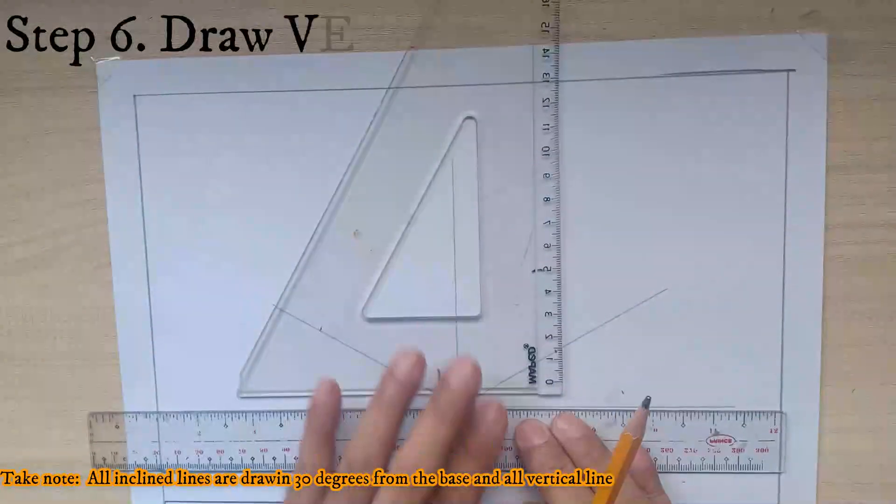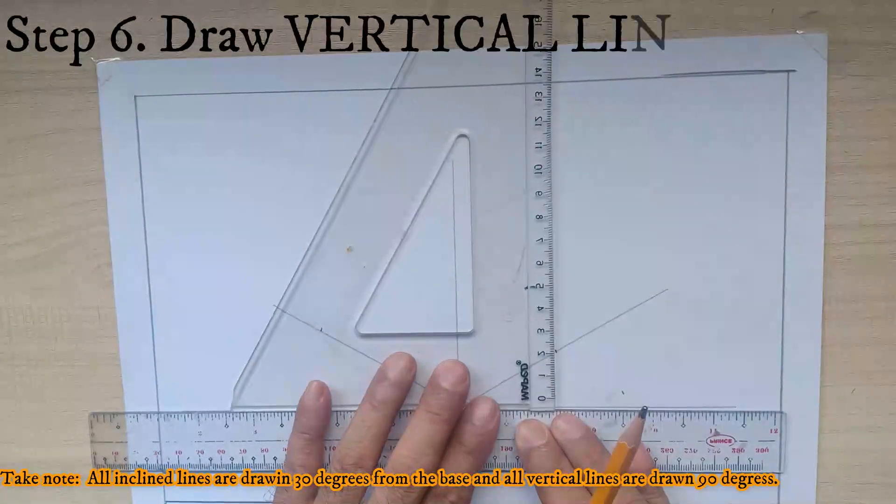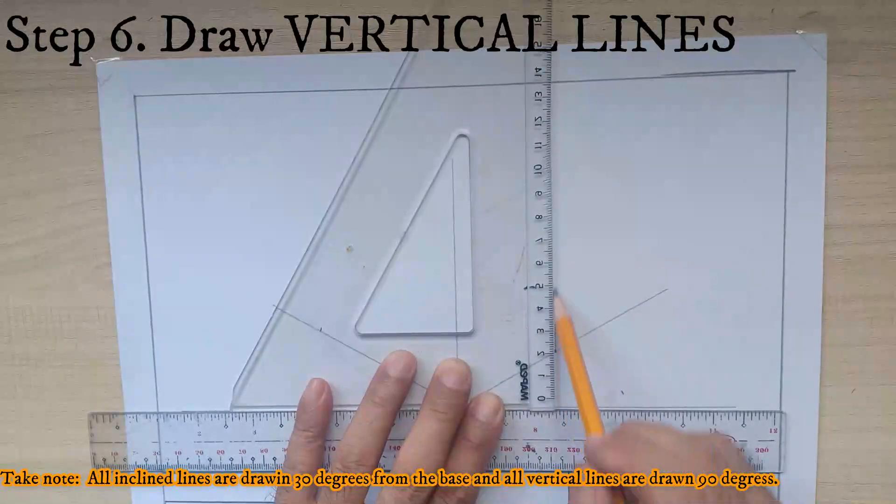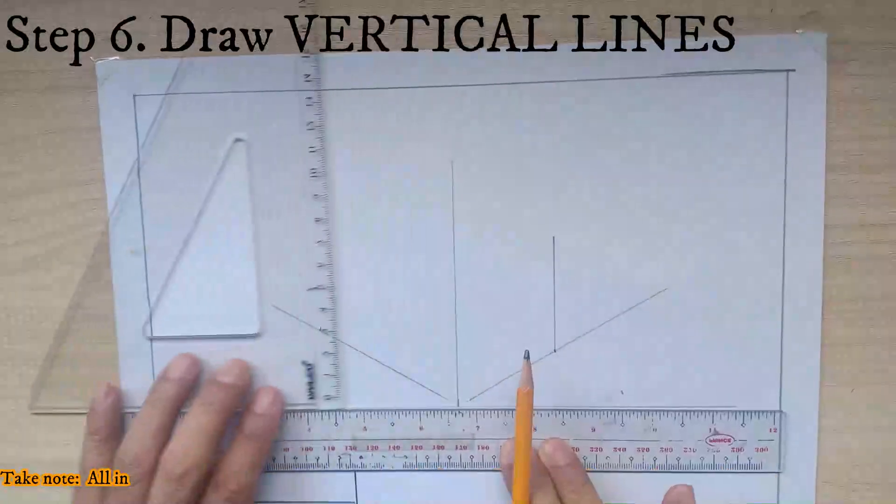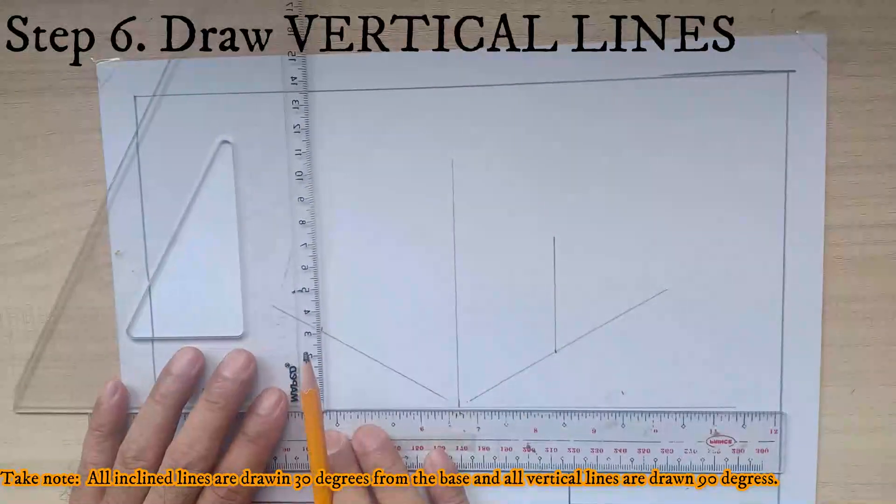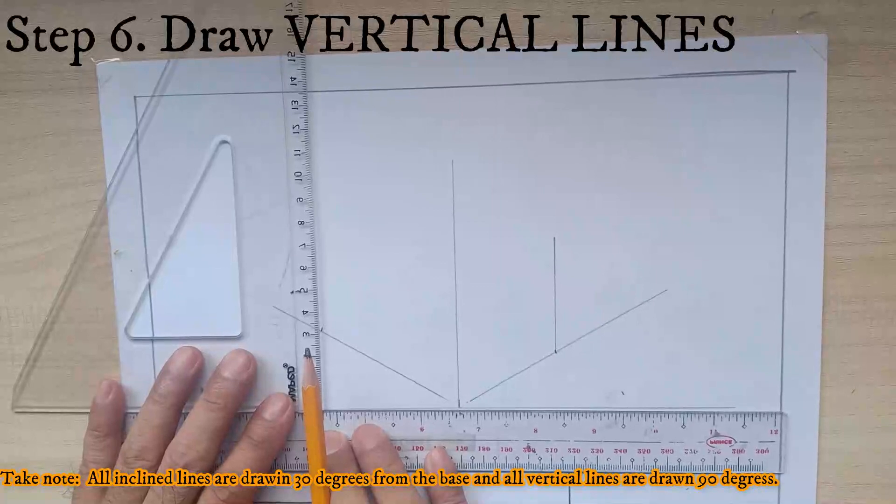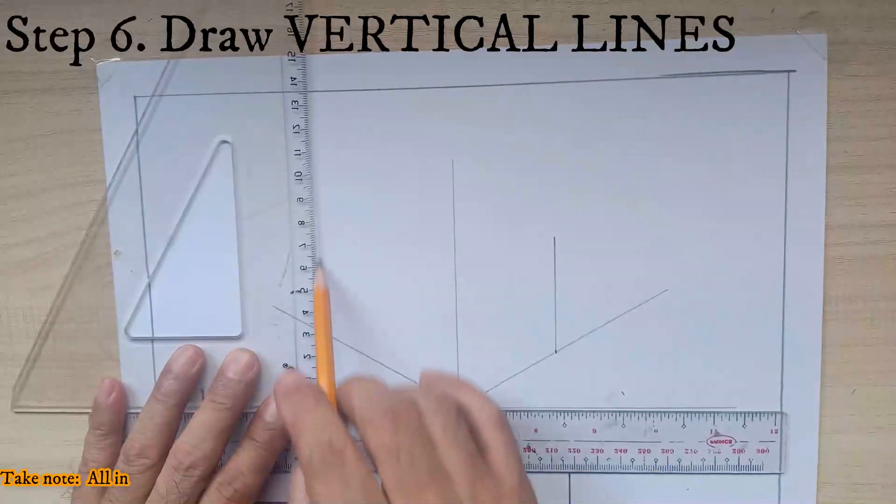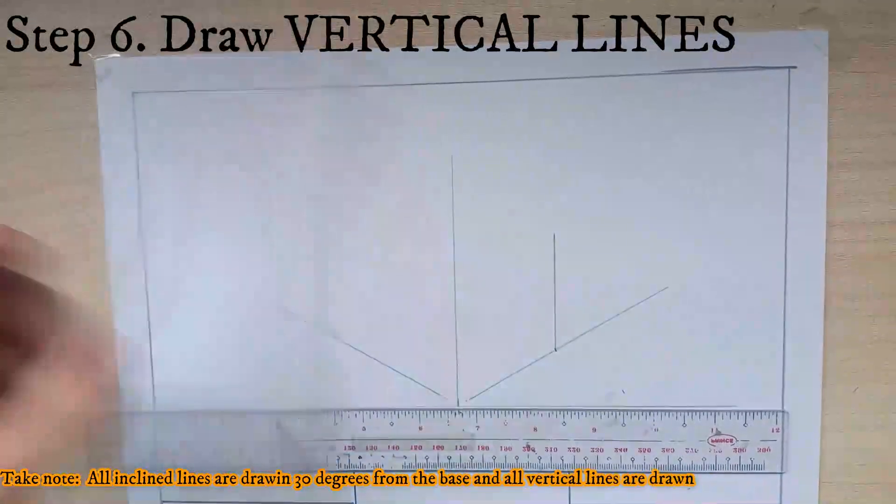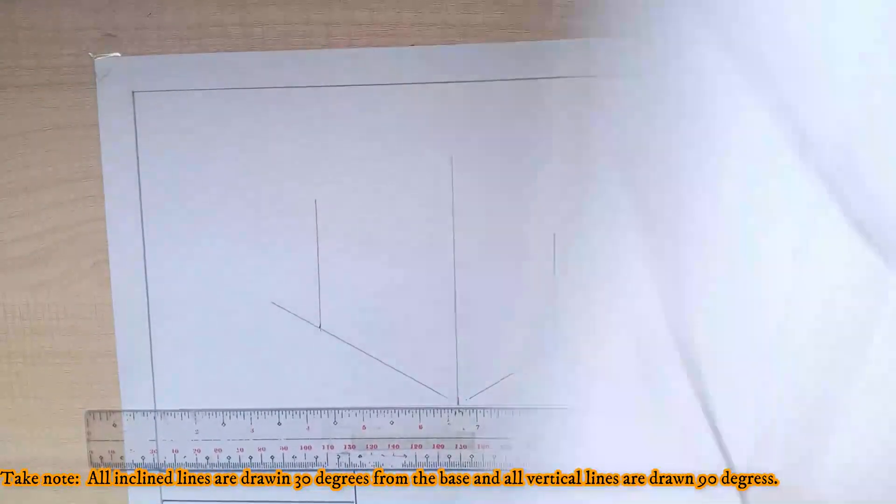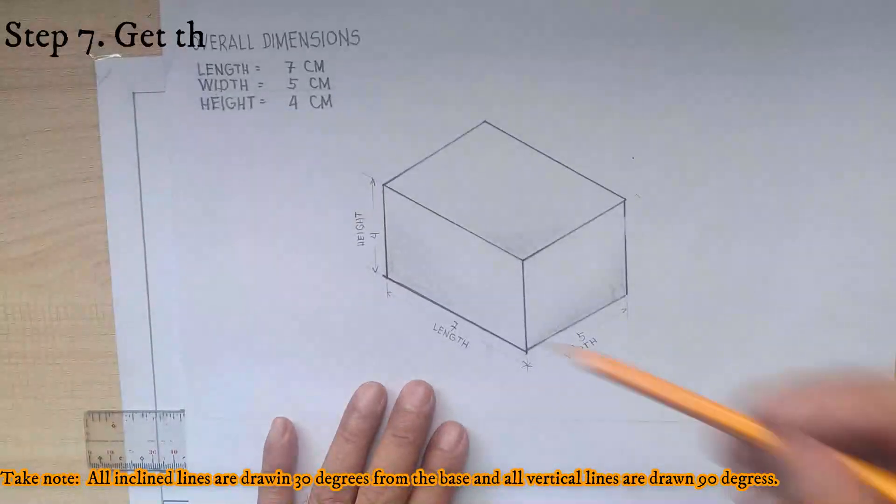The next step is using your triangle and your ruler again, draw a vertical line on both sides of the drawing.